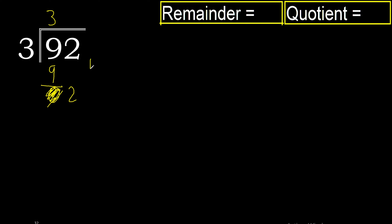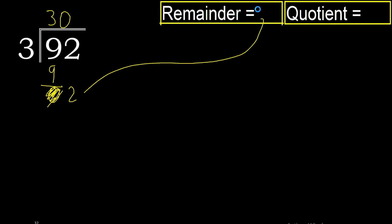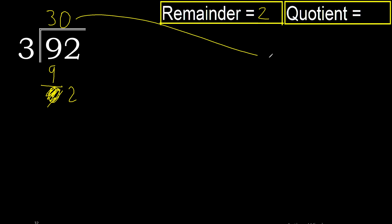There is no number that comes down, therefore we finish with the digit that descended. We complete here with 0. Finish — the remainder is 2.